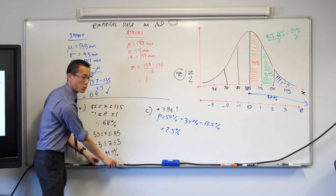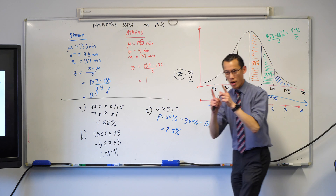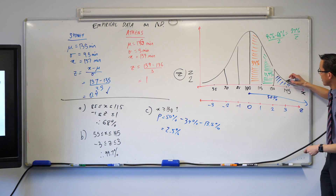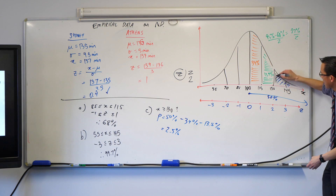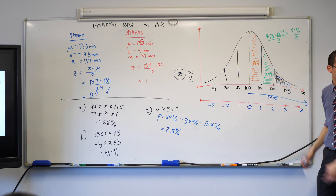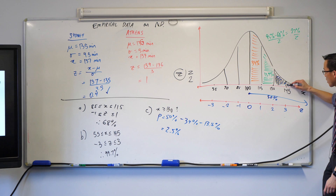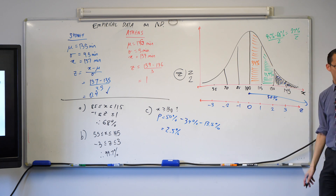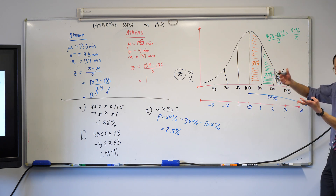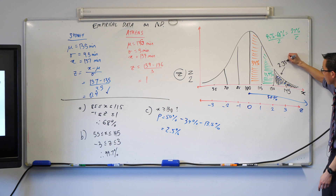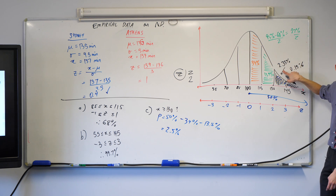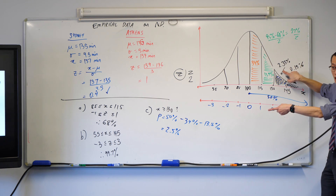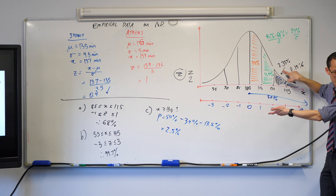As a final note, we could have done it another way. Instead of that subtraction, you could work out each outer section separately. Those come out to 2.35% and 0.15%. Guess what happens when you add those up? You get the same two and a half percent that we got before.